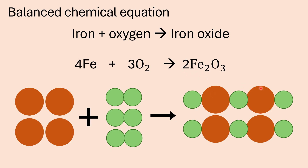If you check the number of atoms on the left and the right: there are four iron atoms on the left — shown as yellow dots — and four iron atoms on the product side. On the reactant side, you have three times two — that's six oxygen atoms. And on the product side, there are also six oxygen atoms: two times three is six. There is your balanced equation for the reaction of iron with oxygen.